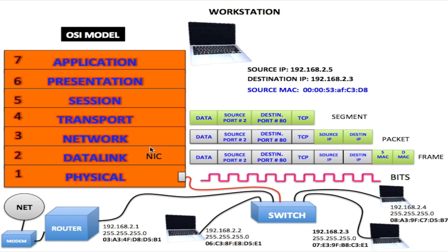At the data link layer, this is where all the network interface cards reside, and they all have a MAC address. This MAC address is burned into the network card — no two network cards have the same MAC address. If you're coming from this computer here, this would be the MAC address for this computer. And if you're going to this computer here, this would be the MAC address of that computer, so you put that as the destination MAC address. So this is all called a frame.